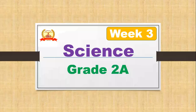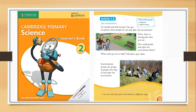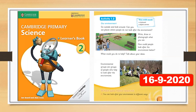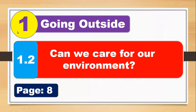Hi everyone, welcome to science class. I'm your teacher Bilal Ahmed and this is week number three. Now look at your science learners book page number nine. You have to open page number nine and then write this date: 6/9/2000 and twenty. We are in unit number one: Going Outside.